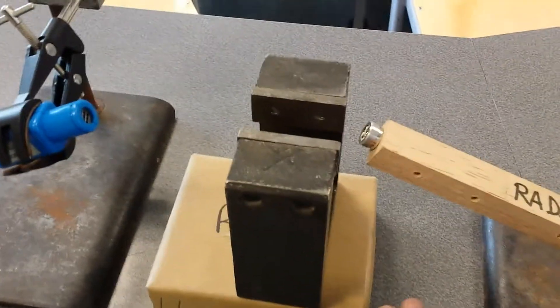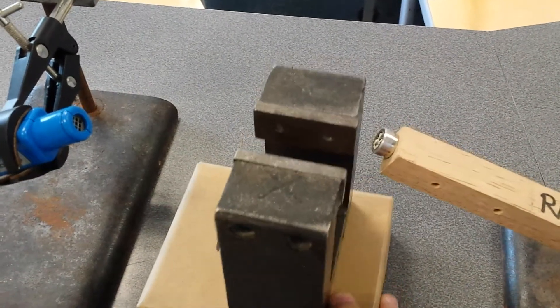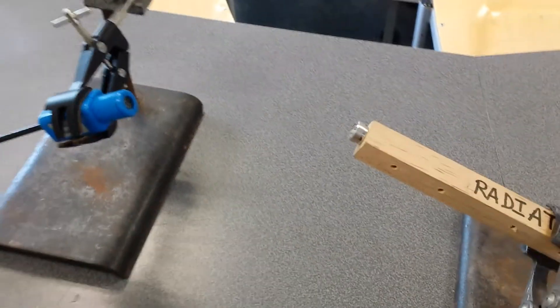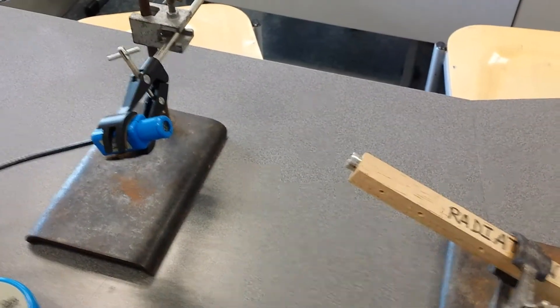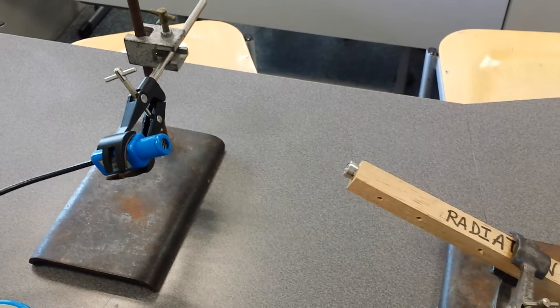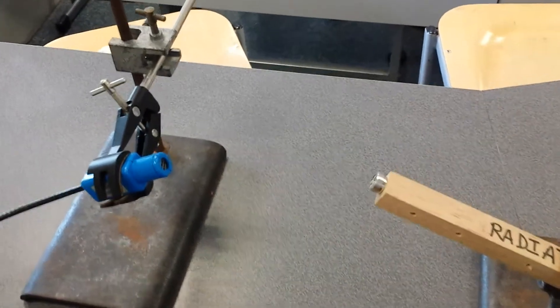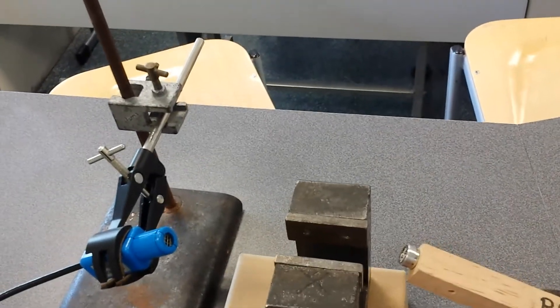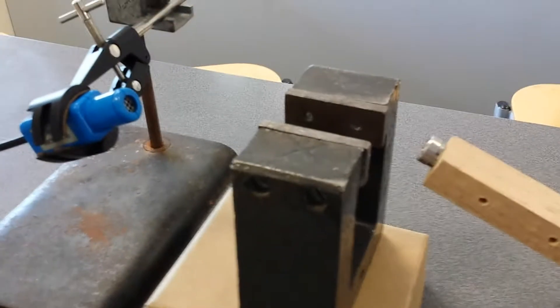We're looking at the idea whether beta particles are affected by magnetic fields. You can hear the count rate. Now we're going to place the magnet in the field. It should be affecting my sample now, so we'll see what happens.